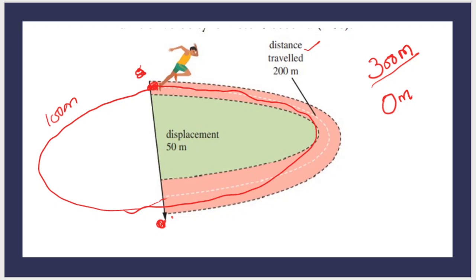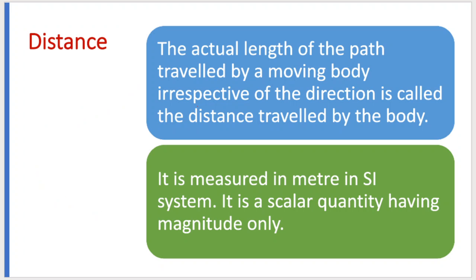So the main difference is: distance is the total length covered; displacement is the shortest distance. In some cases, if starting and ending points are the same, displacement becomes 0. The definition for distance is: the actual length of the path traveled by a moving body, irrespective of direction.